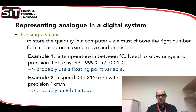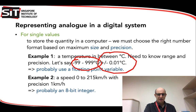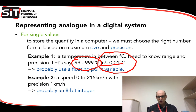Now, if we're talking about a single value — temperature yesterday, for example — when we store that in a computer, we need to think about two things: the range (how big or how small it can be) and the precision we want to store. I have an example using a temperature between minus 99 to plus 999 degrees C, with a precision of plus or minus 0.01 degrees centigrade. Because you're using a fractional value as the precision, it's probably better to use a floating point variable.